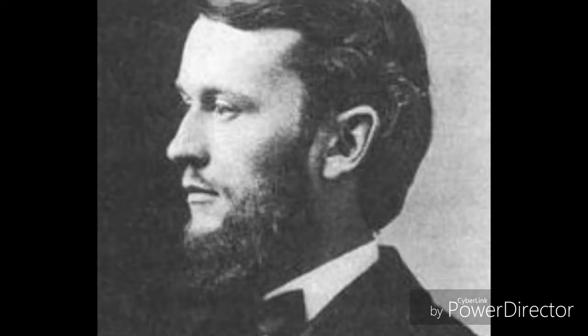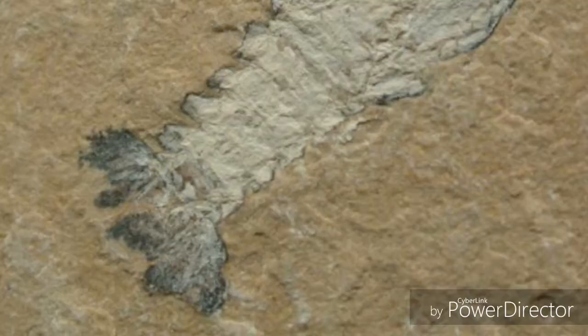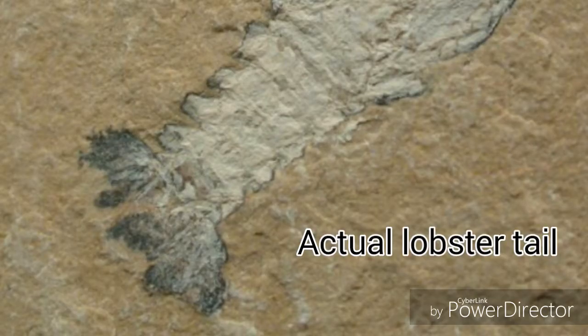Originally, when the first fossils were discovered by Joseph Friedrich Whiteaves, and later more fossils found by Charles Doolittle, the fossils were thought to be separate creatures. Joseph mistook the fossils and said in 1892 they belonged to a separate crustacean-like creature, because the arm reminded him of a lobster tail.